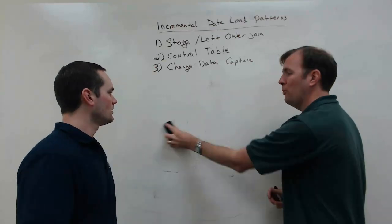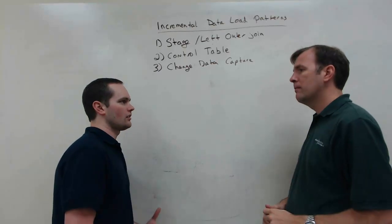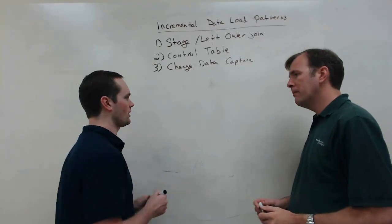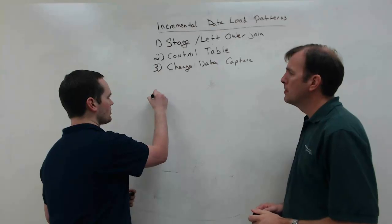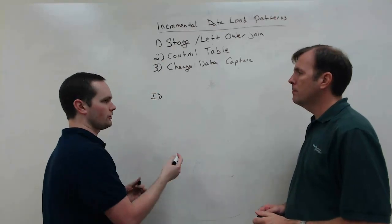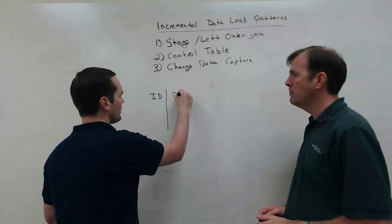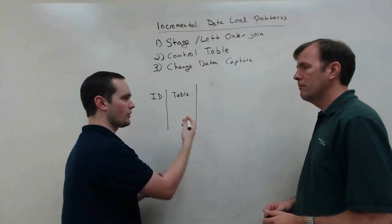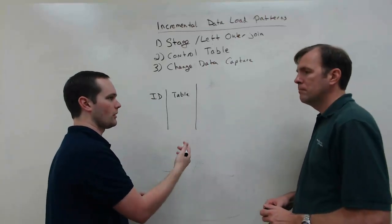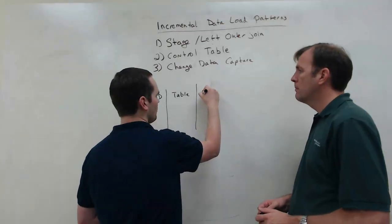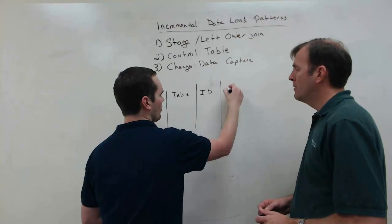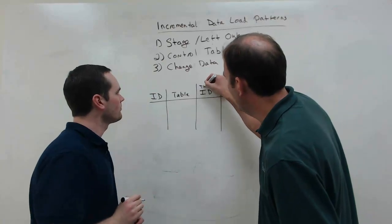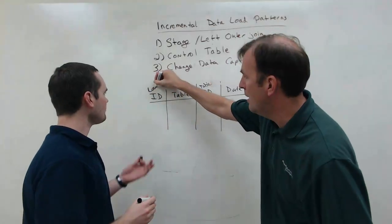What do we mean by a control table? Basically what we have is a table that stores what data we actually moved each time we load the table. So we might have an ID column — just a 1, 2, 3 — to tell us which load we're running on. We might have a table name, because we need to know which table we're looking at. We might have the identity column for that table — like customer might have customer ID 1, 2, and 3, so the ID inside of that table. Or we might have a date. Let's call this a table ID, and then a load ID so you can identify those.